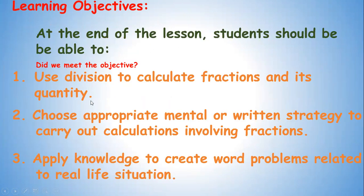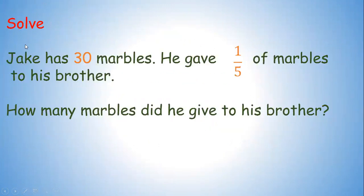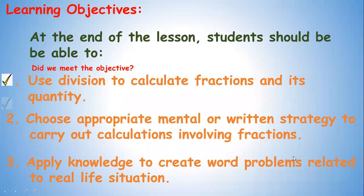Let's assess our learning objectives. So we are able to use division to calculate fraction and its quantity. Now how about we choose appropriate mental or written strategy to carry out calculation involving fractions. Now this is a word problem. So Jake has 30 marbles. He gave one fifth of marbles to his brother. So how many marbles did he give to his brother? Again, remember that we have to calculate one fifth of 30. So what we exactly are doing? We are just dividing 30 by 5. So this is how you are going to solve this problem, which is equals to 6. I hope you got your answer correct. Now this was our second objective that we have just met.